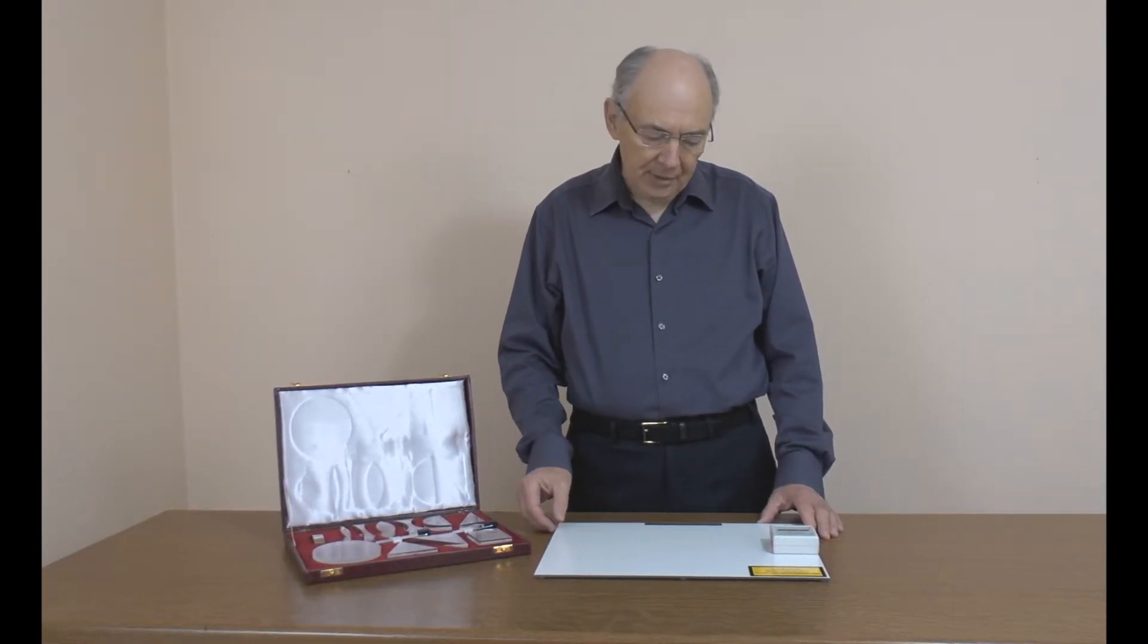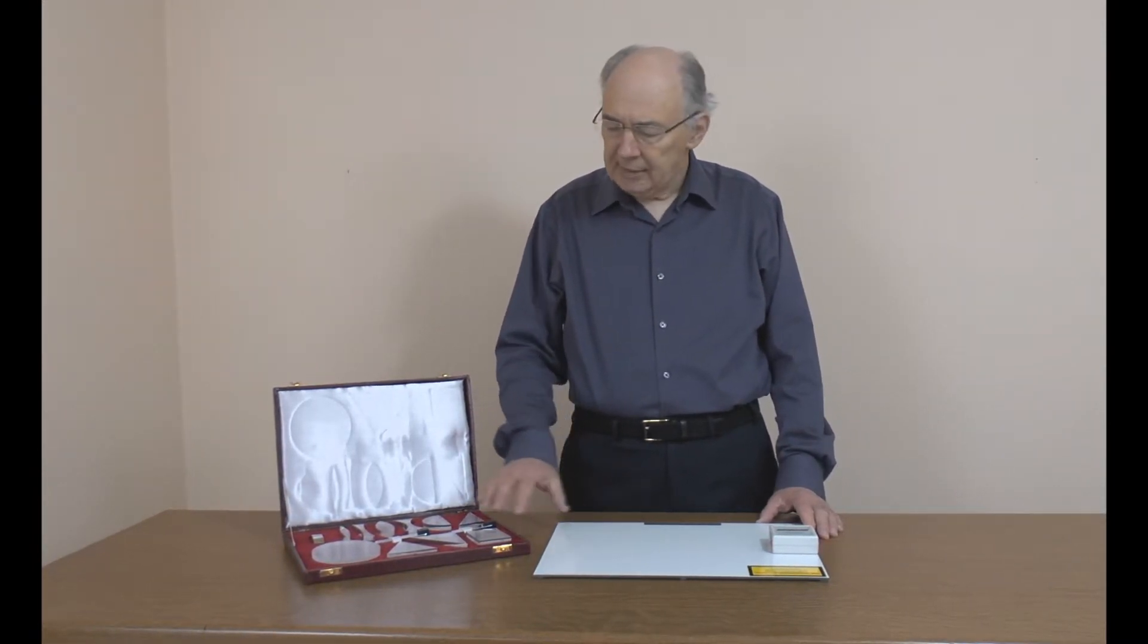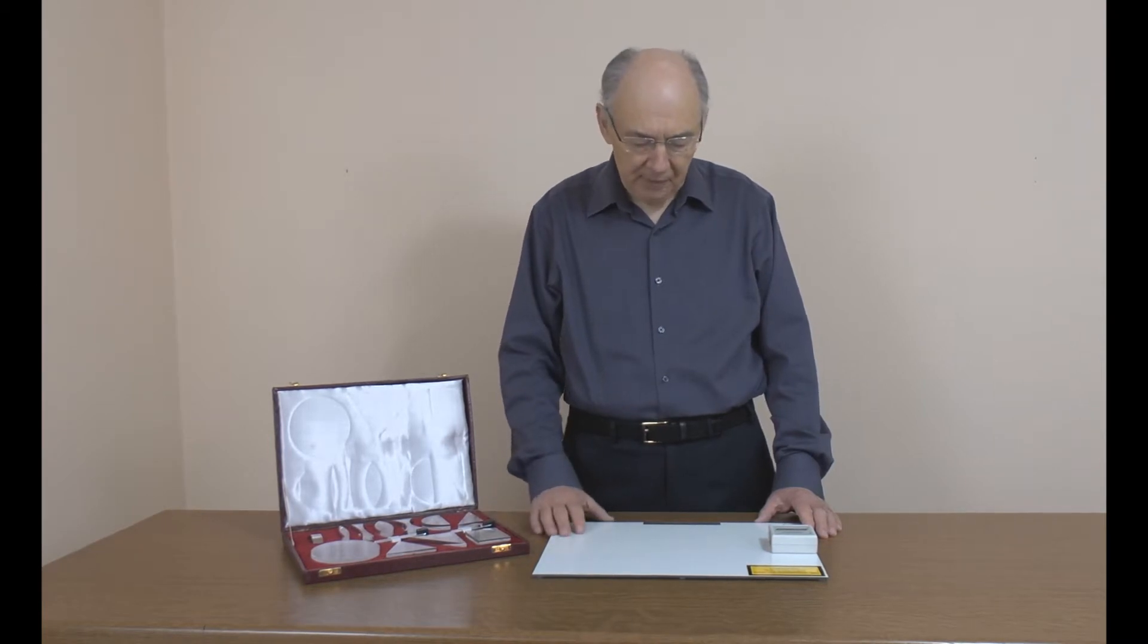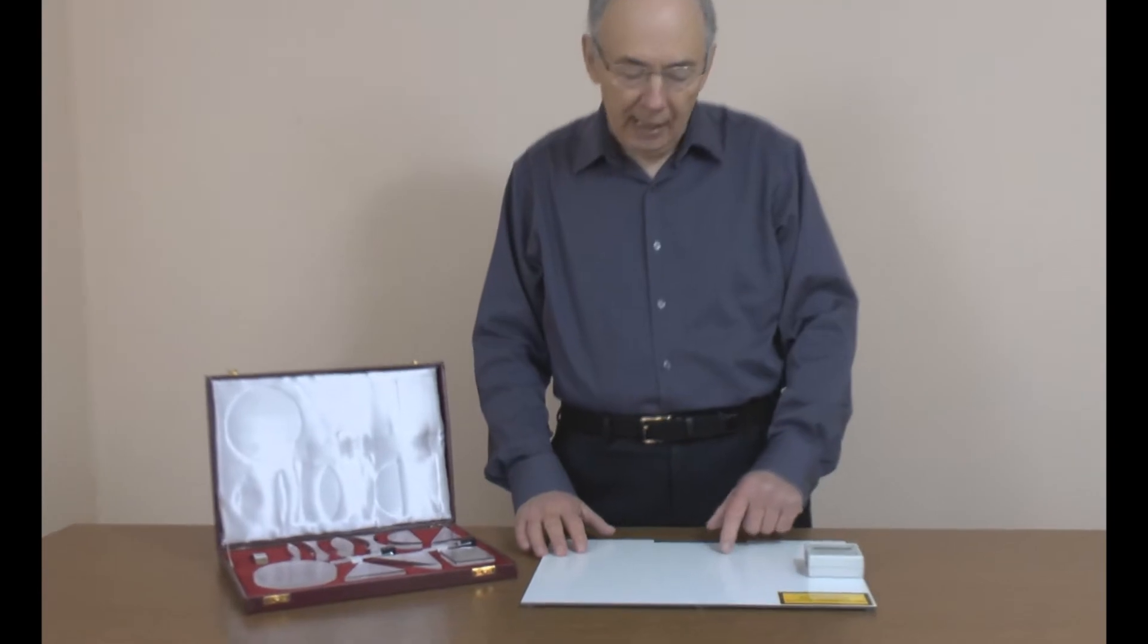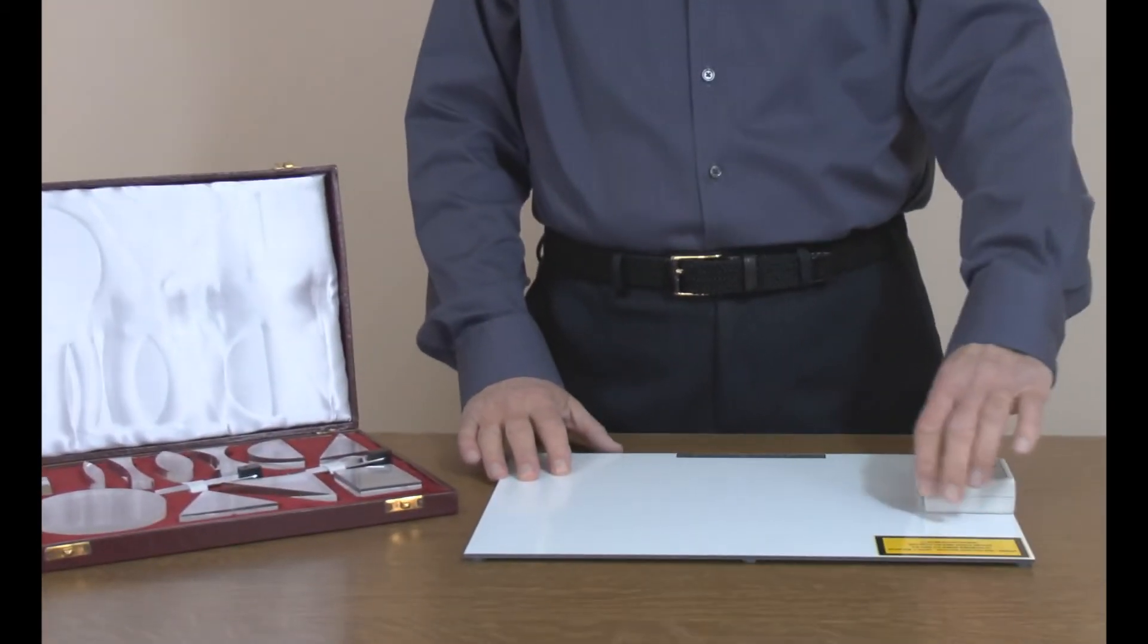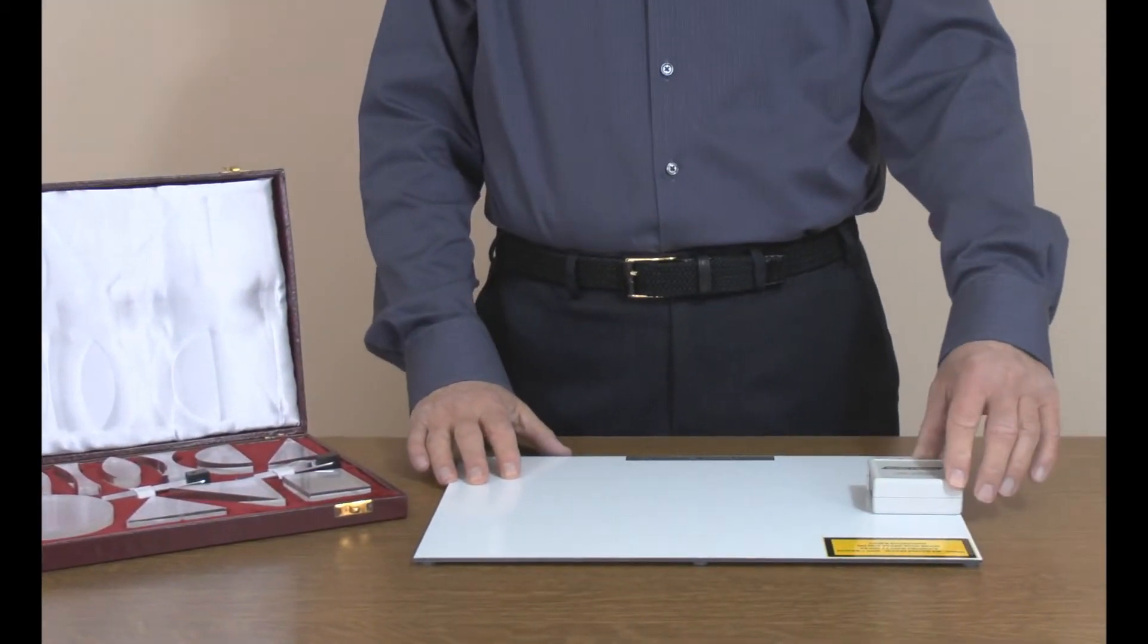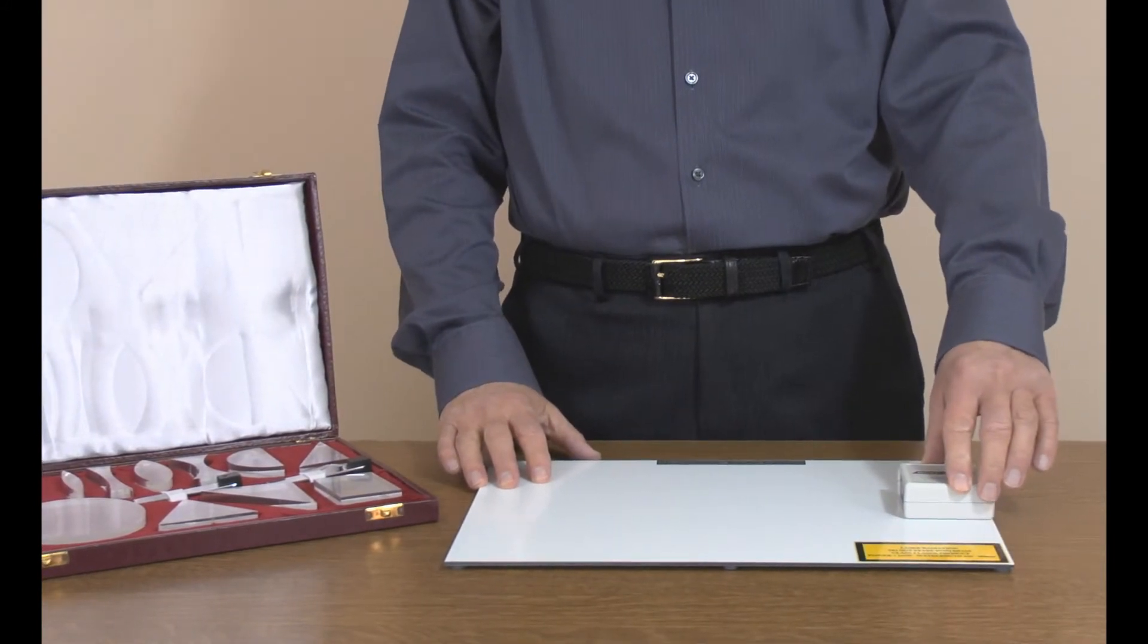We have here our laser light box and a set of lenses and prisms. The laser light box consists of a baseboard, and mounted on that baseboard is this small unit which contains three laser diode modules.